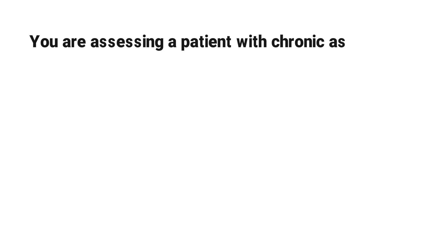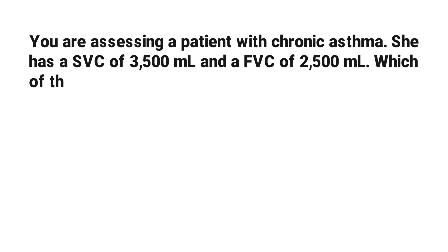You are assessing a patient with chronic asthma. She has a slow vital capacity of 3,500 mL and a forced vital capacity of 2,500 mL. Which of the following best explains this difference?